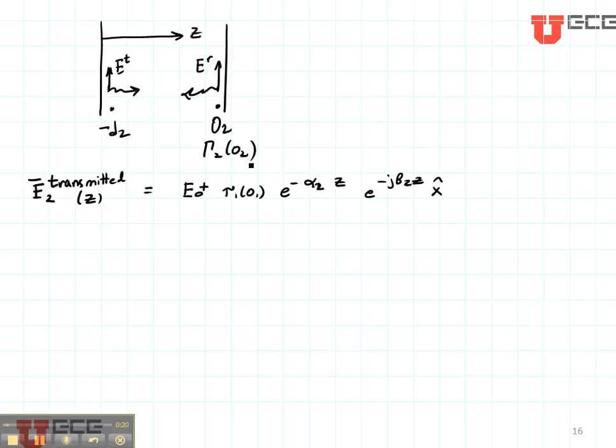The total field in region 2 is the sum of these two waves. The transmitted field acts like the source wave for the reflected field, except that the source started clear over here. We need to know what the source is when it gets to O2, so let's write that.